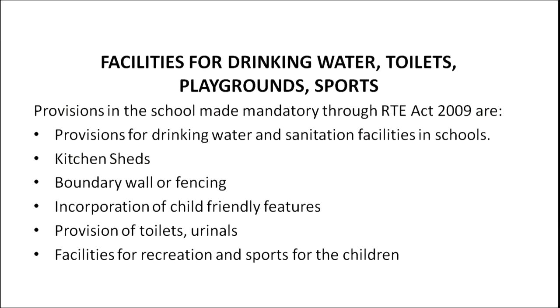Let us discuss the facilities for drinking water, toilets, playgrounds, and sports facilities. Provisions made mandatory under the RTE Act 2009 include: provision of drinking water and sanitation facilities in the school premises; a properly built and monitored kitchen shed; boundary wall or fencing; incorporation of child-friendly features; provision of toilets and urinals; and facilities for recreation and sports for the children.